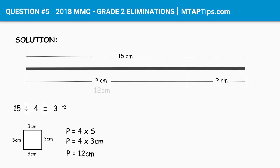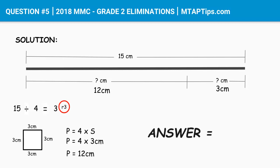So 12 cm is the length of the rope we need to use to form that square. But remember, the question asks for the length of rope that we need to cut, not the rope used to form the square. The total length was 15 cm, and we only need 12 cm for the square. So the difference between 15 and 12 is 3 cm — which is also what we got from the remainder. So the answer is 3 cm; we need to cut 3 cm.